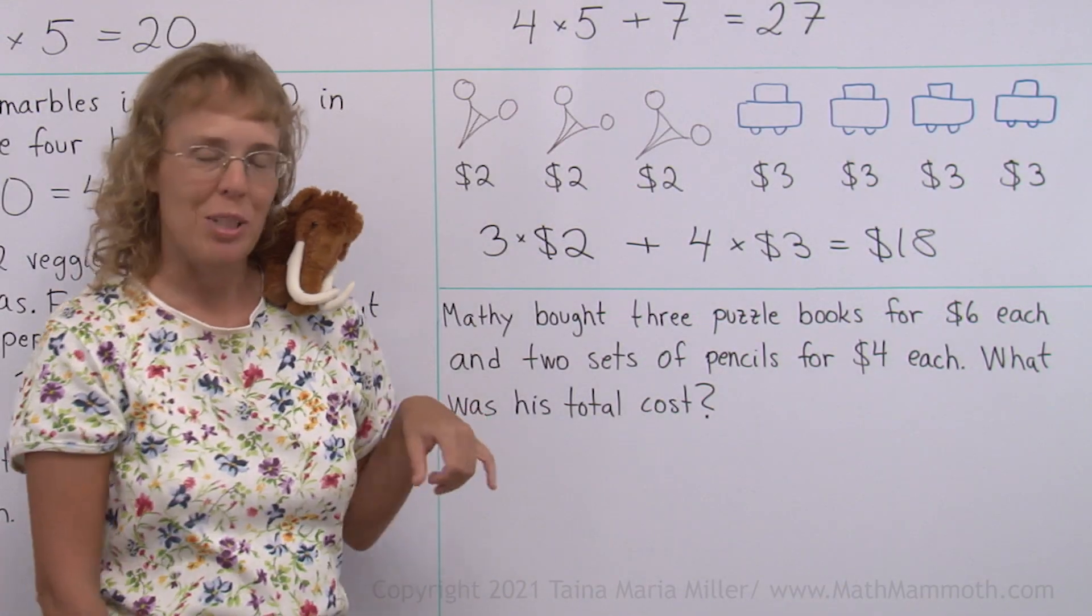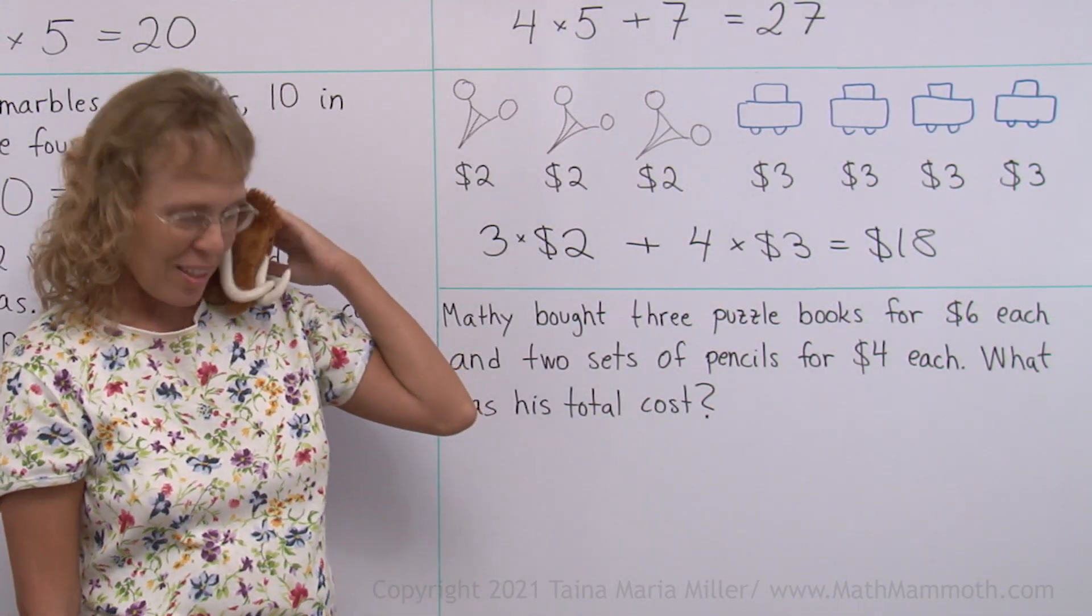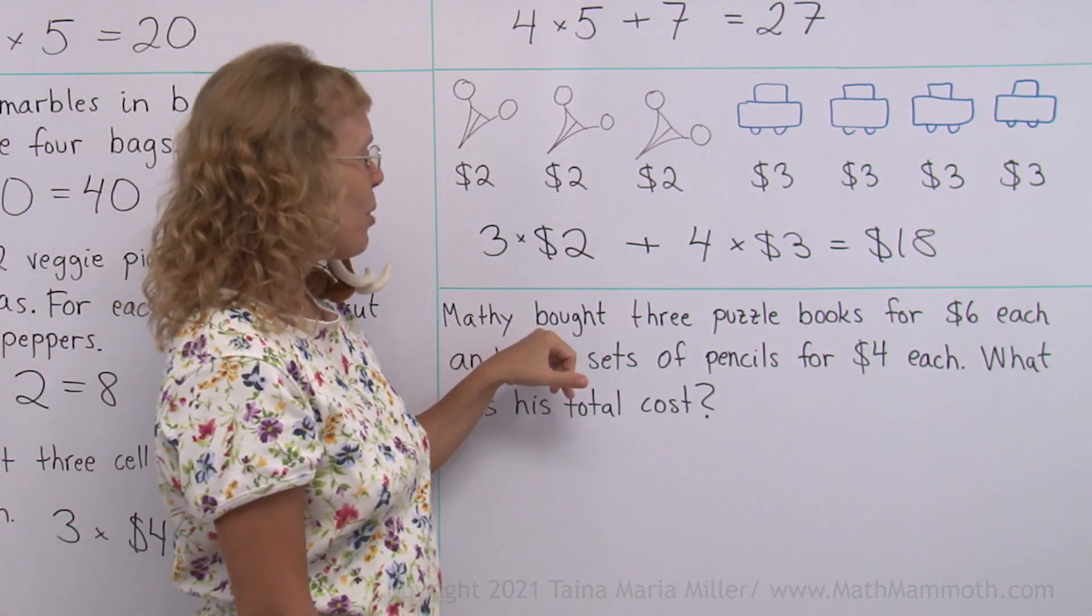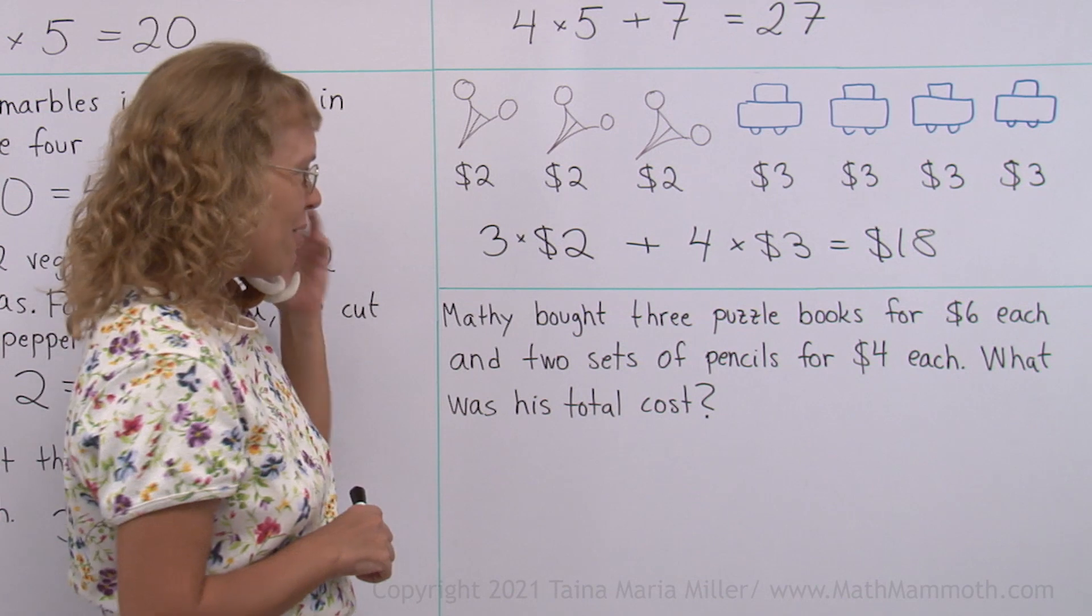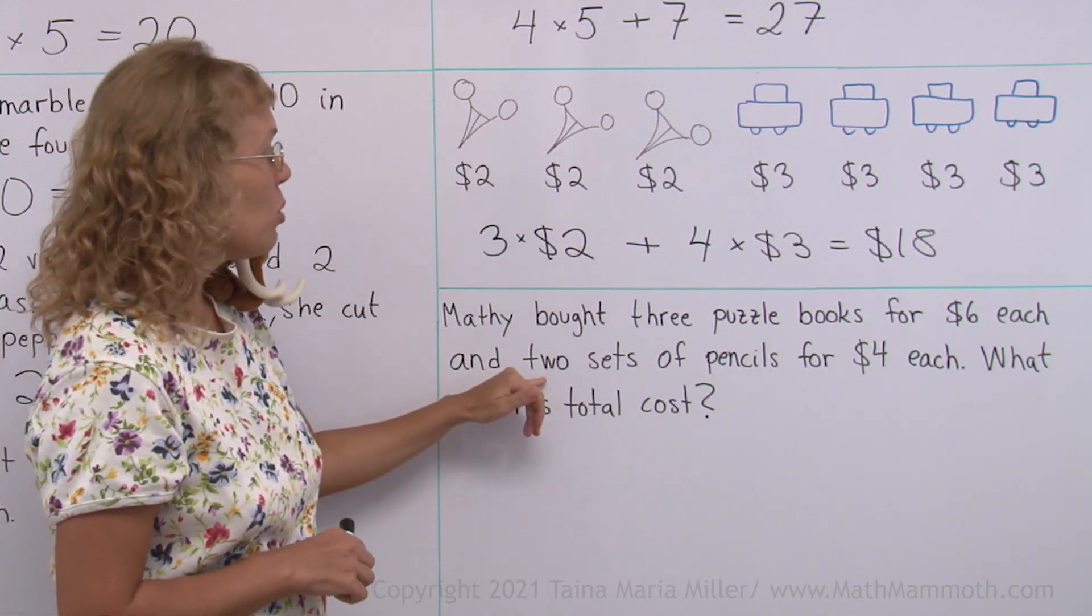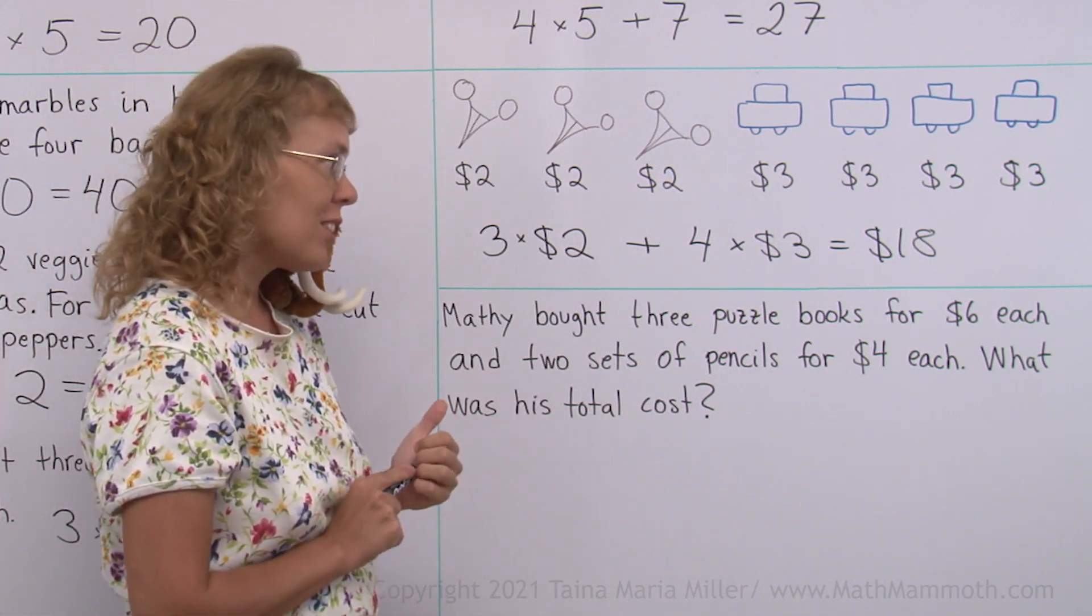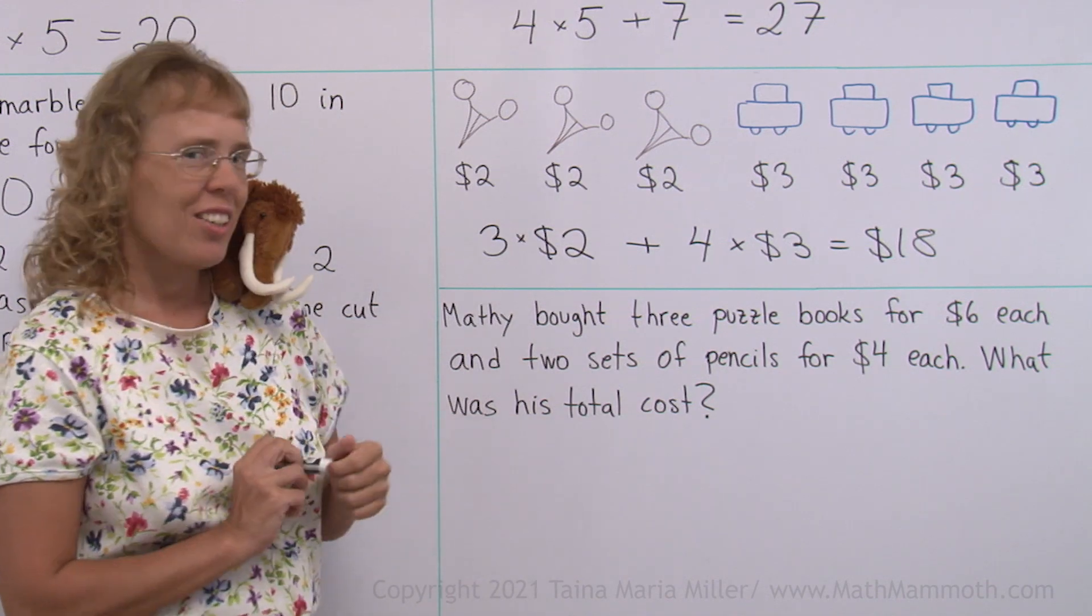And lastly, we have a word problem that Matthew provided for us. So thank you, Matthew. Matthew bought three puzzle books. He loves puzzle books for six dollars each and two sets of pencils for four dollars each. What was his total cost?